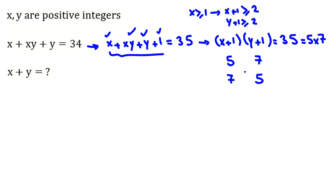So the only possible ways are 5, 7 or 7, 5, because, for example, 1 times 35 is impossible, because x plus 1 should be at least 2.